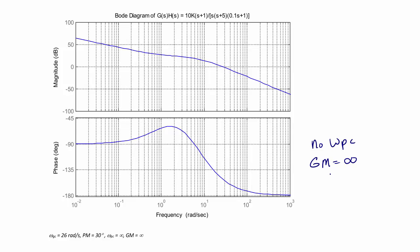The gain crossover frequency is where the magnitude crosses 0 decibels, which happens at approximately 26 radians per second. Dropping down to the phase plot at that same point, the phase is approximately negative 150 degrees, giving a phase margin of 30 degrees. From MATLAB, ω_gc is 26 radians per second, the phase margin is 30 degrees, ω_pc is infinity because there was no phase crossover frequency, and the gain margin is infinity.